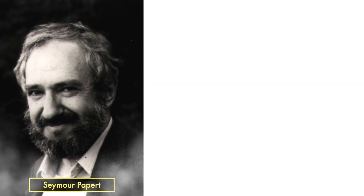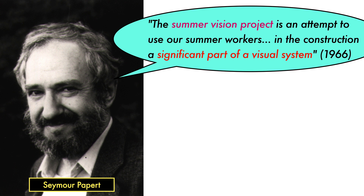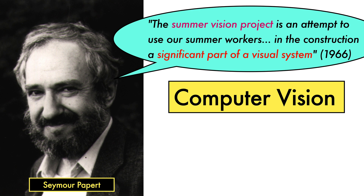In 1966, Seymour Papert, a researcher at MIT, proposed the Summer Vision Project, an attempt to use summer workers in the construction of a significant part of a visual system. Almost 60 years later, we are still working to extend this student summer project as part of an interdisciplinary field that has come to be known as computer vision.